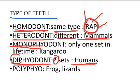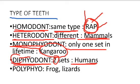Organisms that have only one set of teeth in their lifetime are monophyodont. The example is kangaroo — that is very important. Polyphyodont, as the name indicates, means more than two sets. Their teeth keep falling and growing back many times. The examples are frog and some lizards. This is very important.